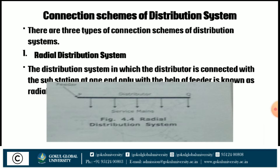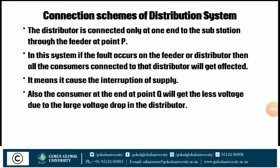Now we discuss the different connection schemes of distribution systems. First is the radial distribution system. The distribution system in which the distributor is connected to the substation at one end only with the help of a feeder is known as the radial distribution system. In this system, if a fault occurs on the feeder or distributor, all consumers connected to that distributor get affected — there is an interruption of supply. Also, the consumer at the far end will get less voltage due to the large voltage drop in the distributor.